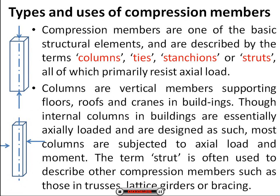Introducing what a column is. I threw a question to the class in our last discussion on WhatsApp — that you should be able to differentiate between a column and a strut. I am still expecting a response. A column or strut is defined as a member of a structure which is subjected to an axial compressive load. Compression members are described by the terms columns, ties, stanchions or struts, all of which primarily resist axial load.